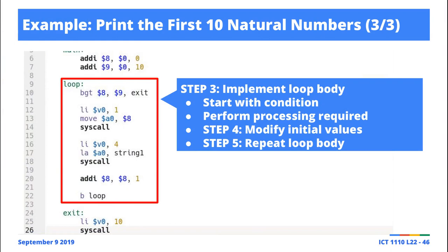And then more importantly, you must modify the initial value so that you process the next item in the list. In this case, modifying it is just as simple as figuring out or coming up with an instruction that is going to enable you to process the next natural number.